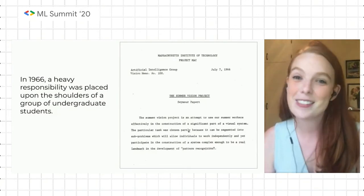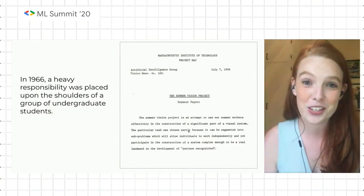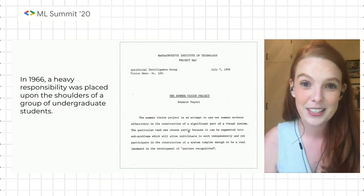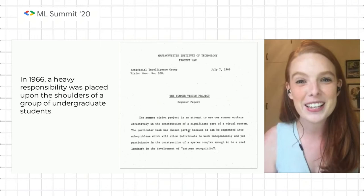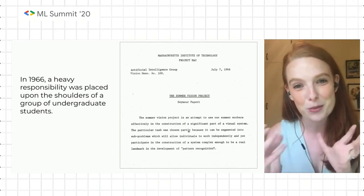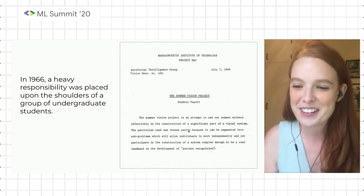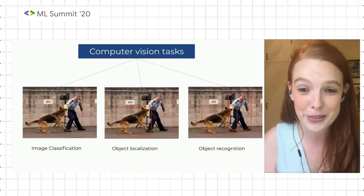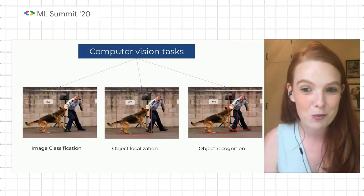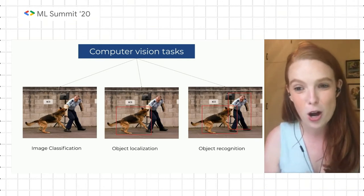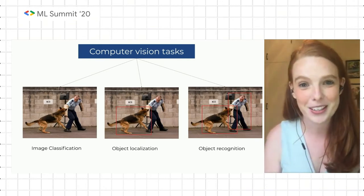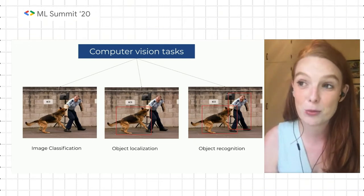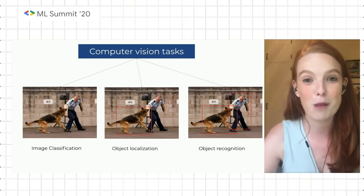In 1966, a group of interns at MIT had a very heavy burden placed on their shoulders. They were asked to make a camera that could interpret the world. This was a prelude to many of the computer vision tasks that we seek to model — image classification, where you're trying to classify a single image, object localization, object recognition. The interns understandably did not succeed that summer, because it paved the way for a very difficult problem.